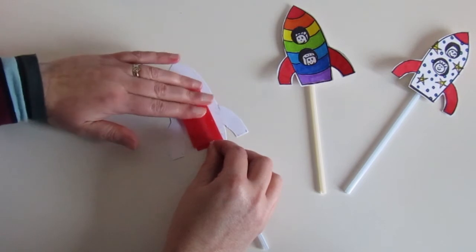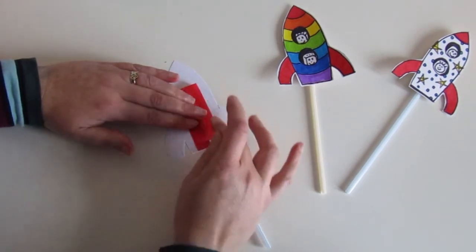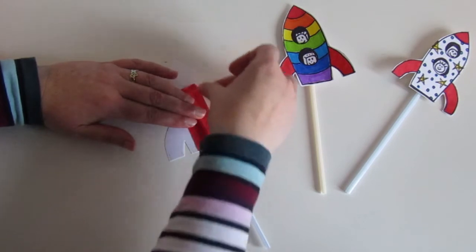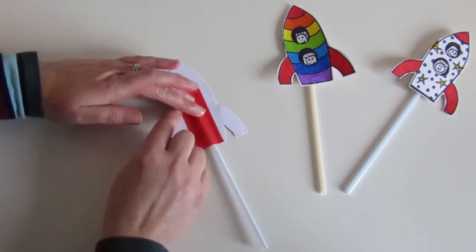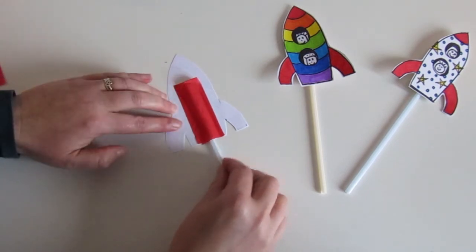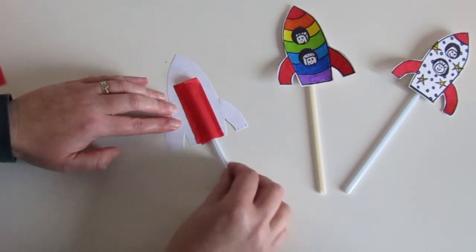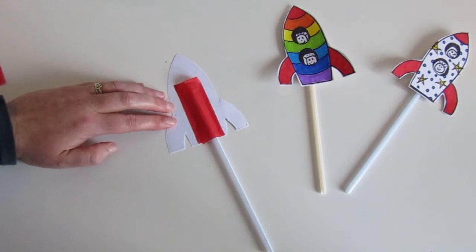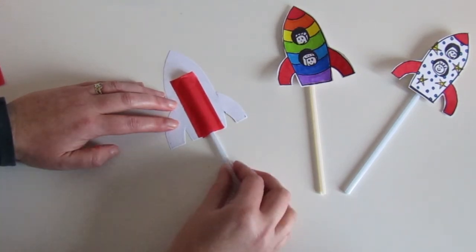Flip this over and then with my one hand I'm holding and the other hand I'm just going to gently stick it down. Now can you see we've got some wiggle room. This is important because when you're using your straw rocket you want to be able to put the straw in and out.